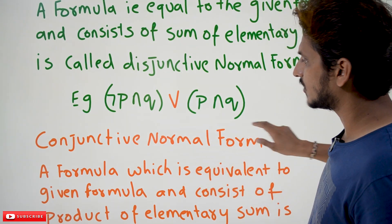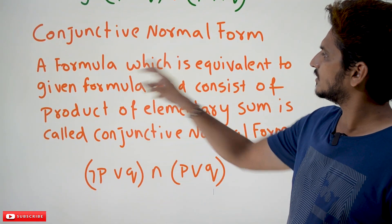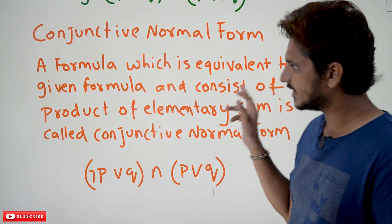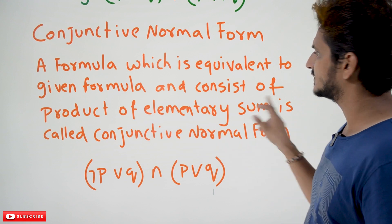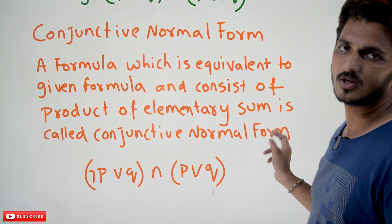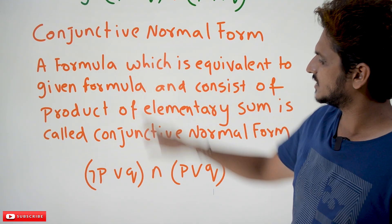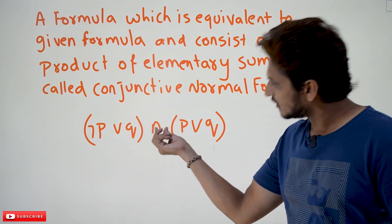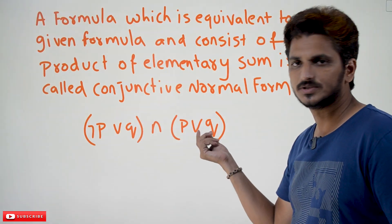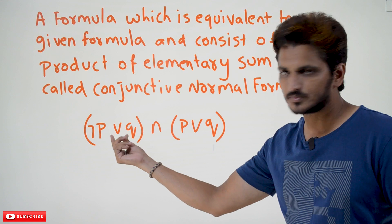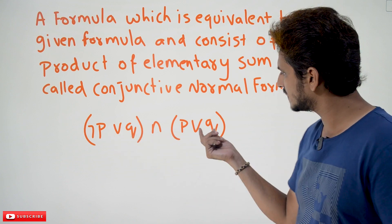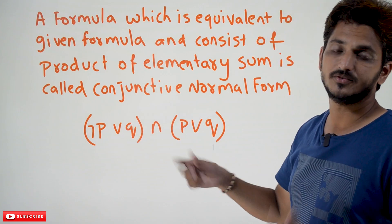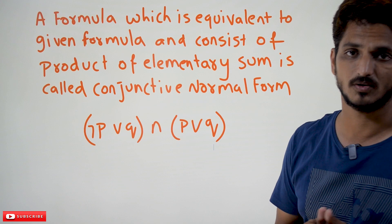Similarly, conjunctive normal form: a formula which is equivalent to the given formula and consists of a product of elementary sums is called conjunctive normal form. Conjunction means product — so it is a product of elementary sums. Each proposition in this form is an elementary sum, and their product gives us the conjunctive normal form.